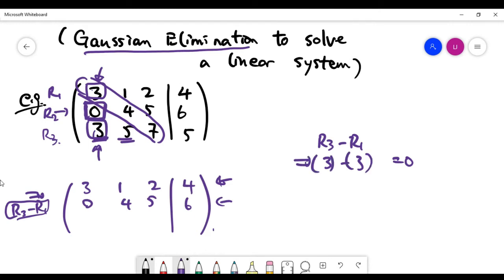As we have seen here, it's going to be three minus three, which is zero for this spot. Let's look at the second column. This number is going to be row three, which is five minus the R1, which is one. So it's going to be four.